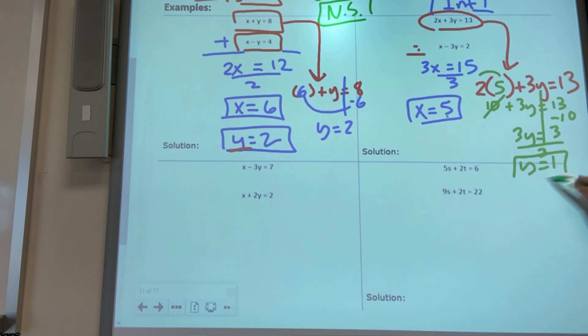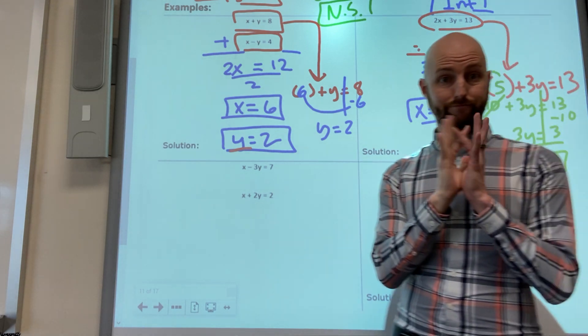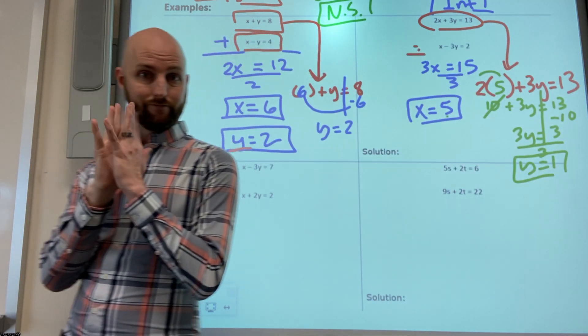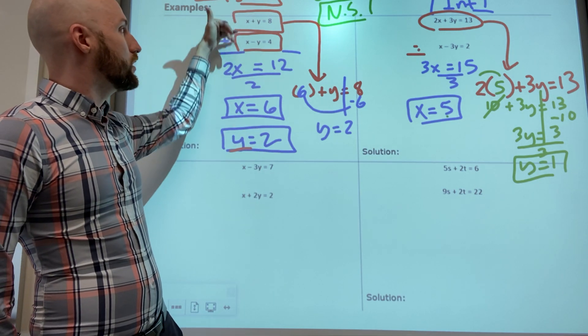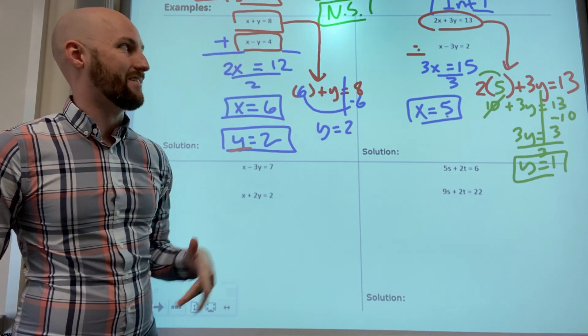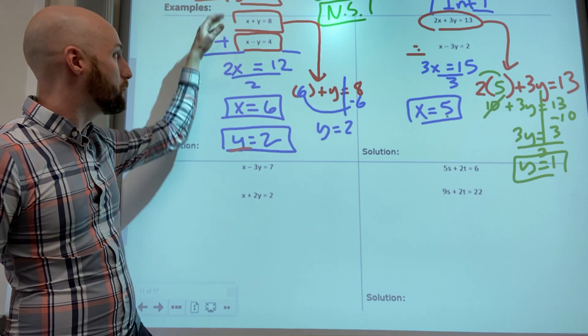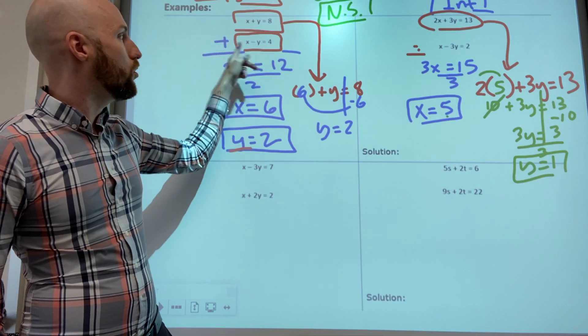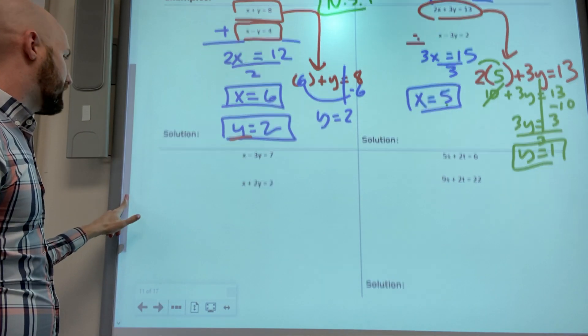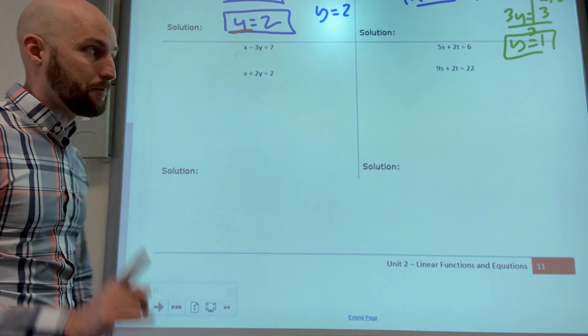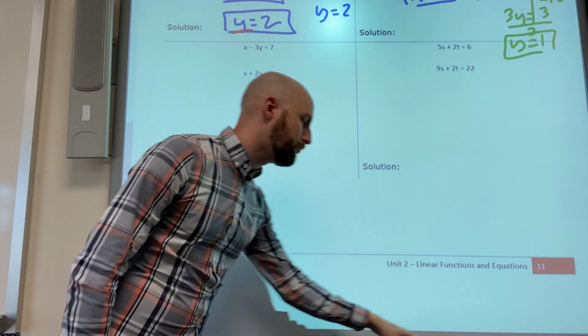So this is elimination when you combine the two equations and makes cancel. Se llama eliminación porque se combina las dos ecuaciones y uno o el otro de la letra se va a cancelar. Let's look at two more, something is going to happen.